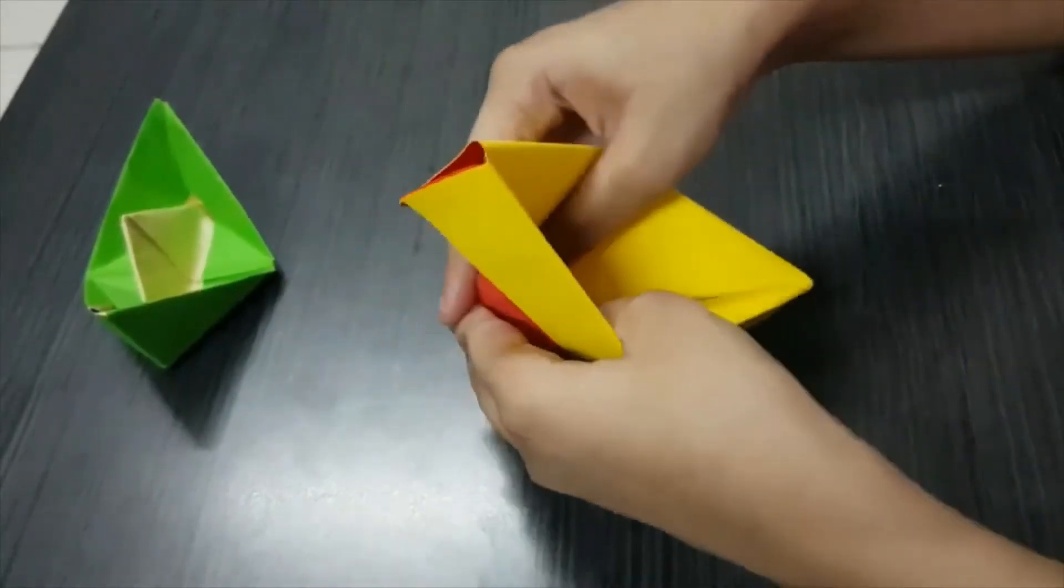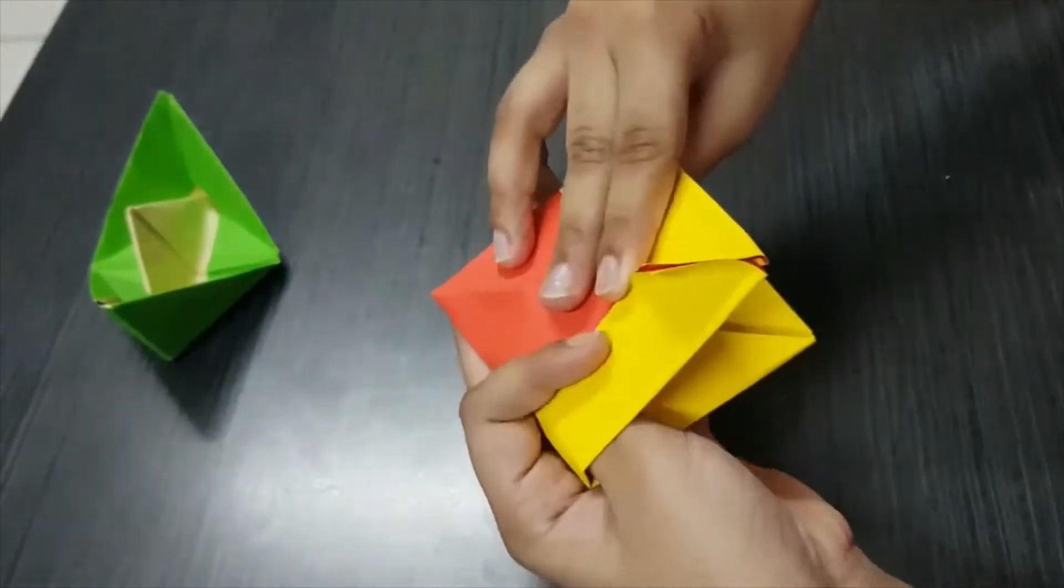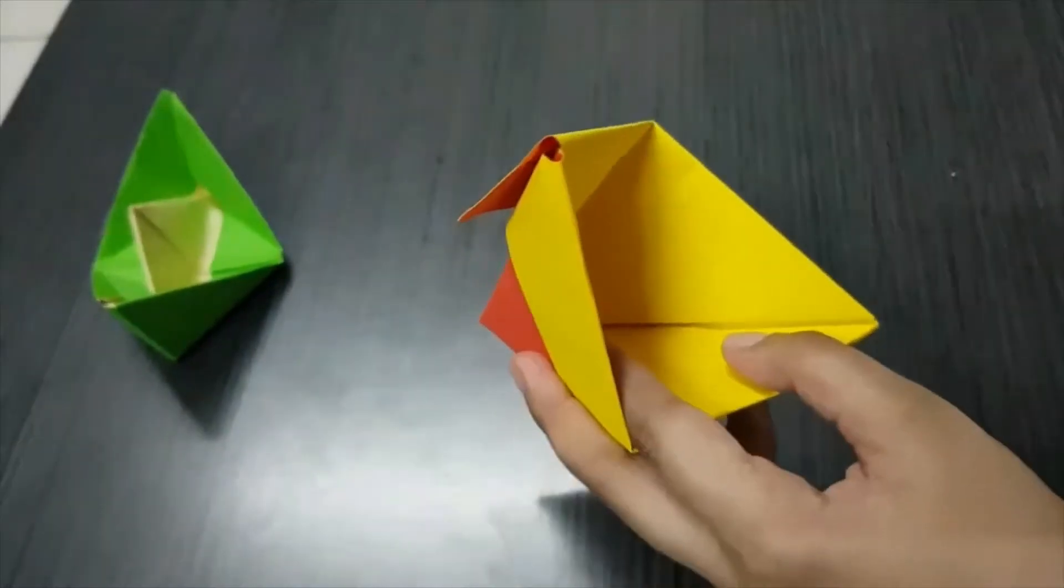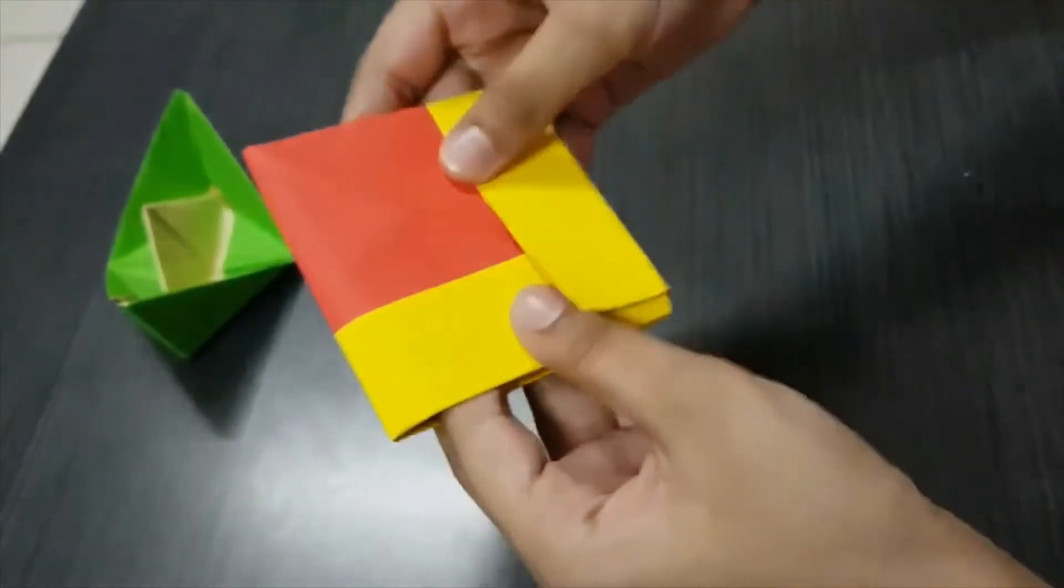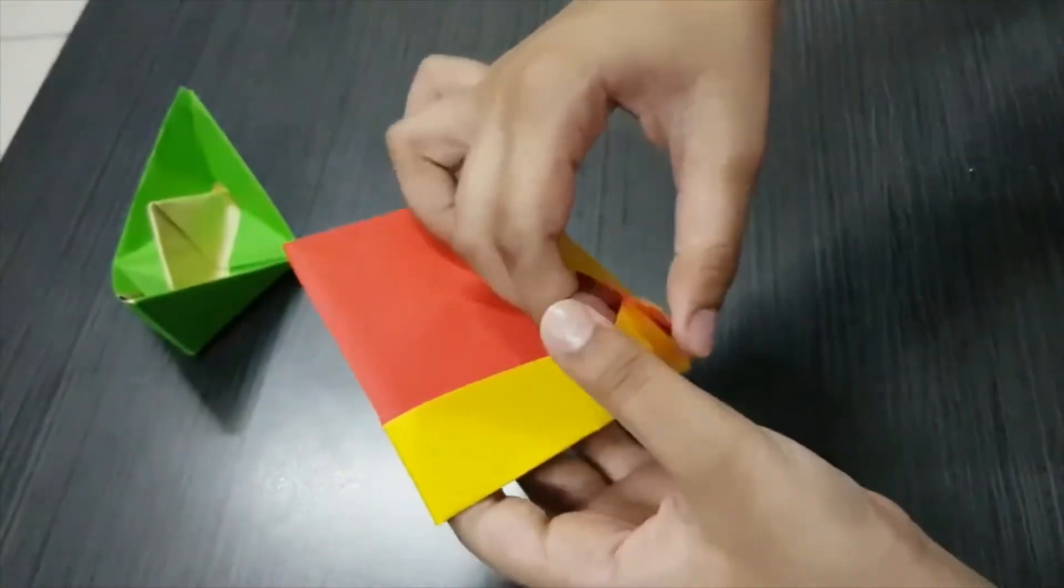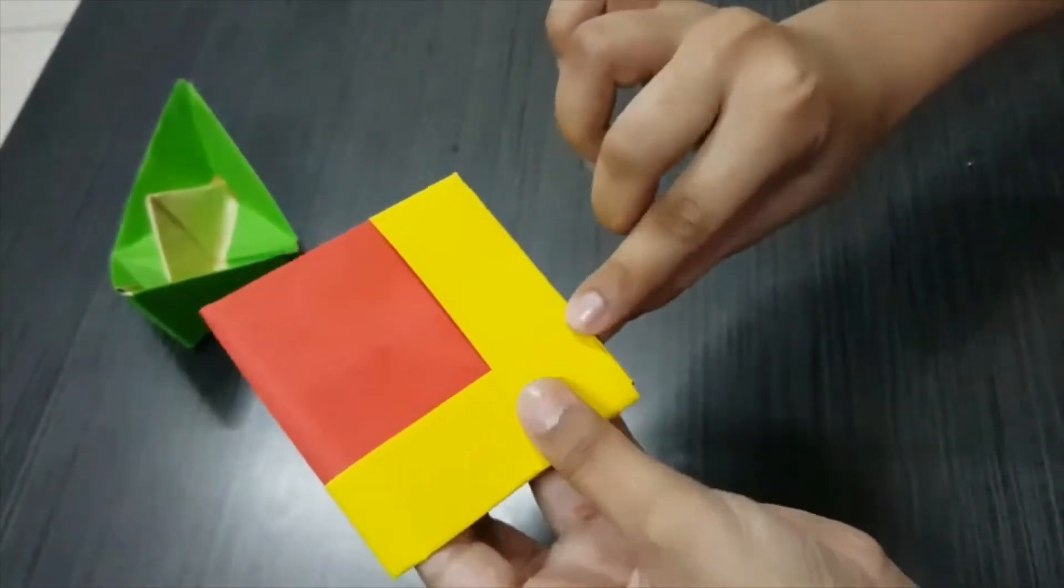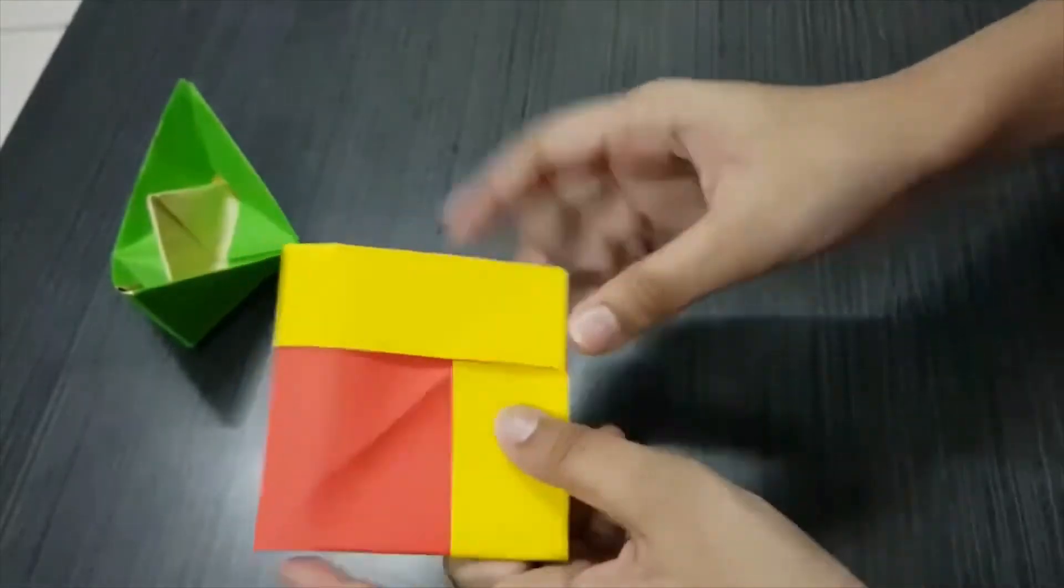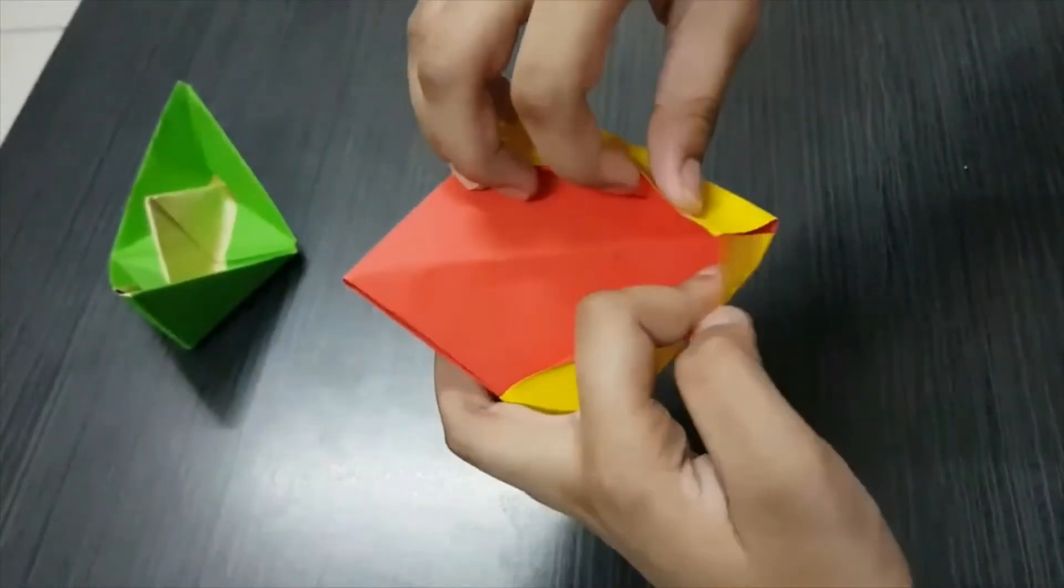Now take it from this inner layer and form it into a diamond. Okay, now adjust these parts like this and from the other side too, like that.